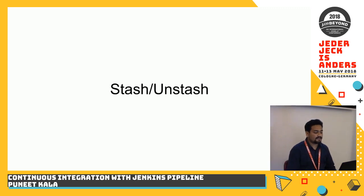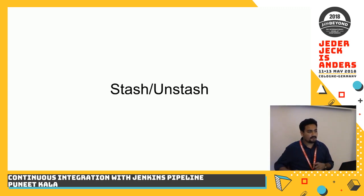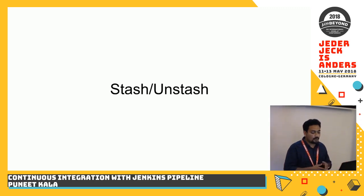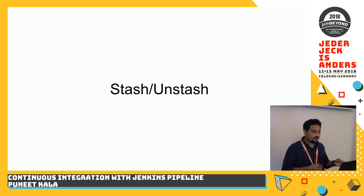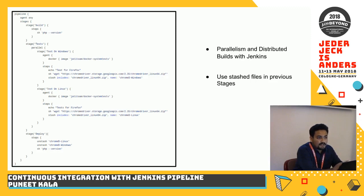Another important concept is stashing and unstashing. There was a feature in Jenkins called archiving artifacts, where you can archive an artifact from a previous stage and use it in the next stage. Stash is similar to archiving but faster in terms of retrieving the resource. For example, if at every stage you want to install Chrome driver or run a composer update and it takes a lot of time, you can reuse resources across parallel stages. You fetch a particular file in one stage, use the 'stash' command, and Jenkins makes sure it is available to all other stages in the pipeline.